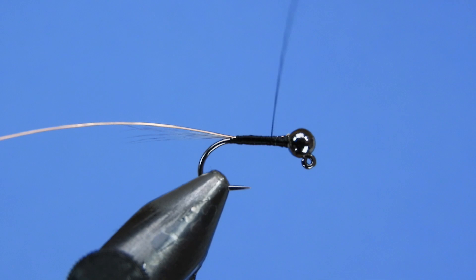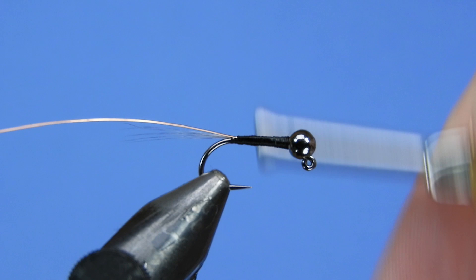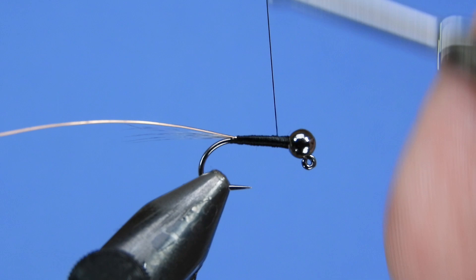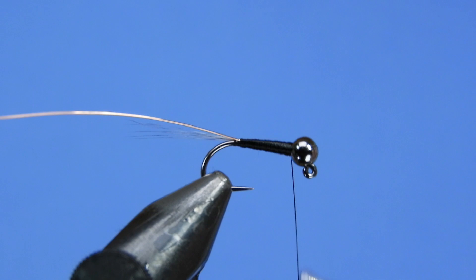So now that we've got our wire and tail, we just want to start building the body. I want to build in a little bit of a taper into the fly. So I start by going back all the way down to where my tie-in was, and then I'll wrap touching turns as much as possible back to the bead and then back towards the tail. I won't go quite all the way, and then I'll come back up to the bead.